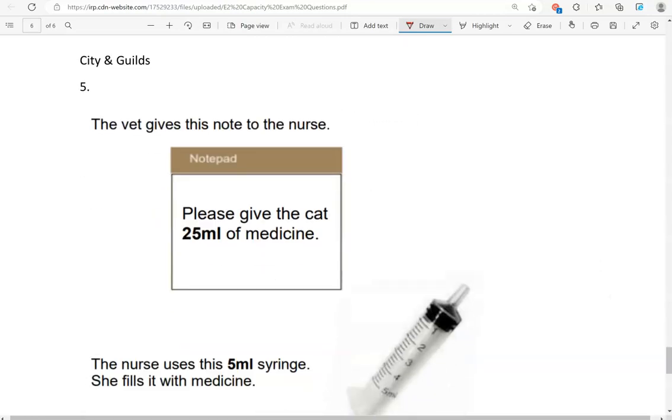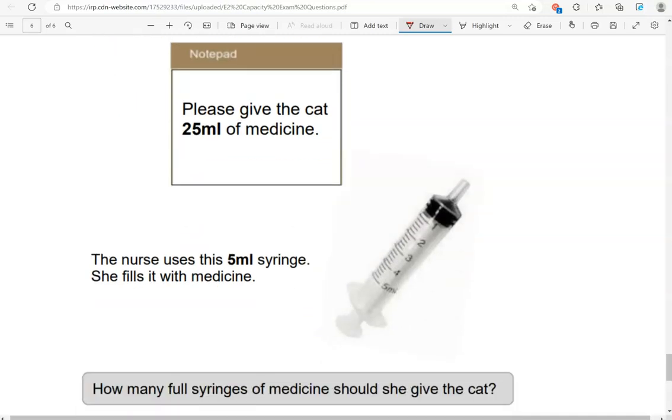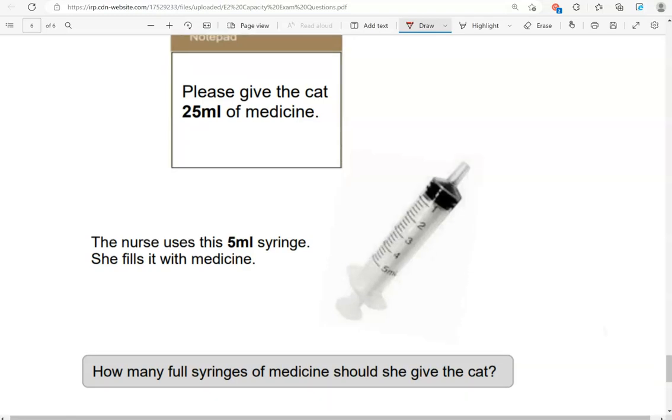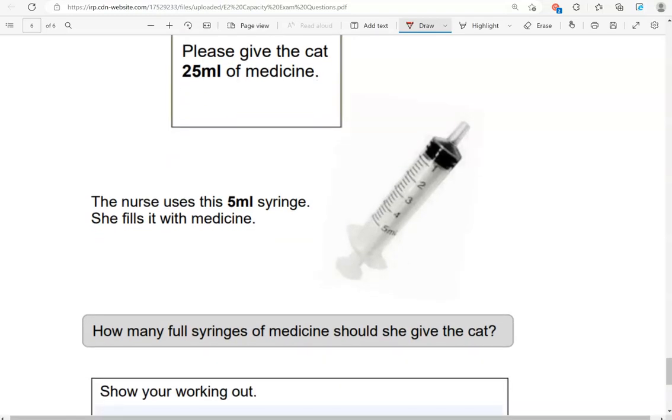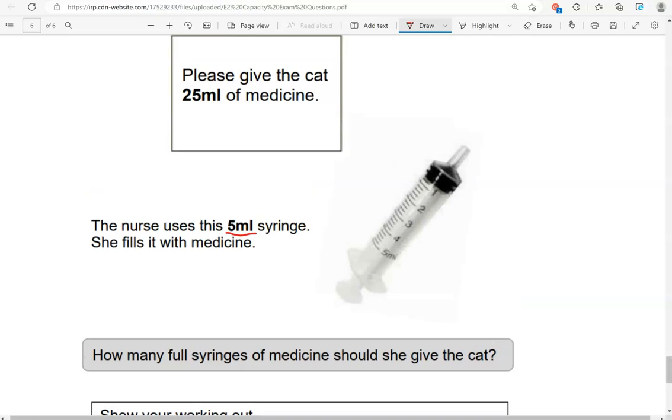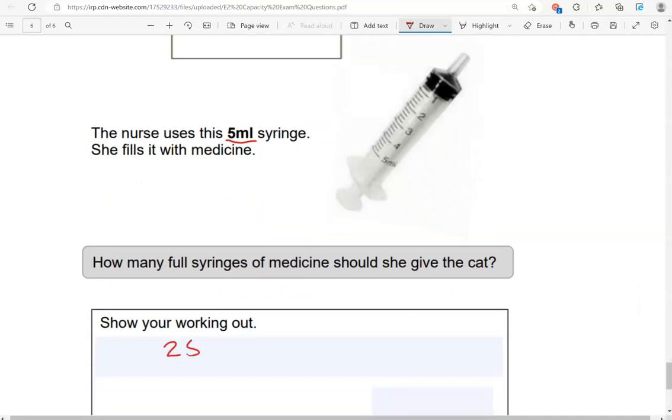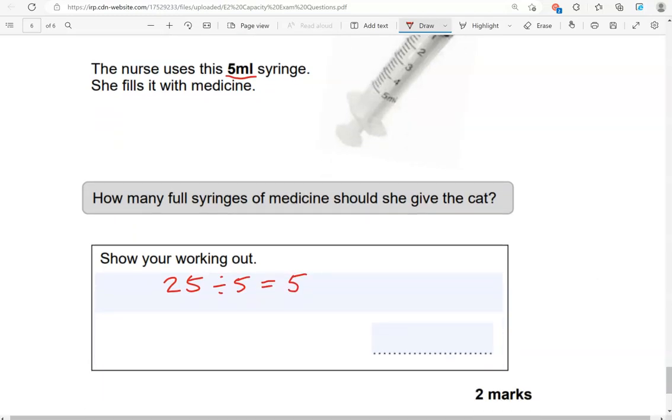The vet gives this note to the nurse. Please give the cat 25 milliliters of medicine. The nurse uses this 5 milliliters syringe. She fills it with medicine. How many full syringes of medicine should she give the cat? So, the syringe holds 5 milliliters. They need to give the cat 25 milliliters. So, what we're going to do is 25 divided by 5, which gives us 5. So, that should be 5 full syringes.